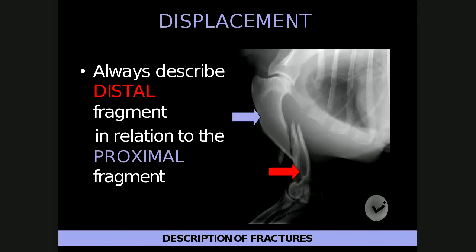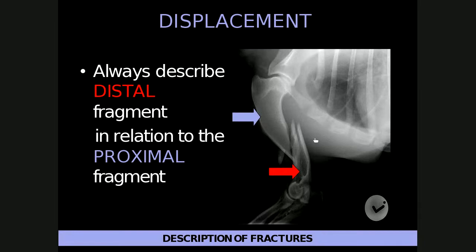Fracture displacement is always described with the distal fragment in relation to the proximal fragment. For example, in a humeral fracture the distal fragment may be displaced mildly caudally and proximally relative to the proximal fragment. An orthogonal view is needed to determine if medial or lateral displacement is also present.